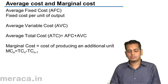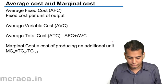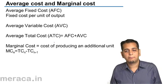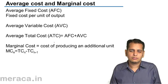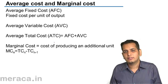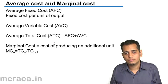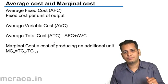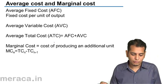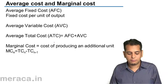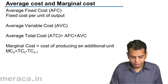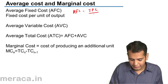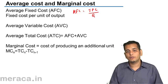Now we will see what is average cost and what is marginal cost. Average fixed cost is the fixed cost per unit of output. We have already done this — I showed you a schedule wherein I gave you fixed cost at various levels of output, and we calculated the average fixed cost, that is the fixed cost per unit at each level. So average fixed cost is nothing but fixed cost per unit. The formula for average fixed cost is total fixed cost divided by quantity of output.